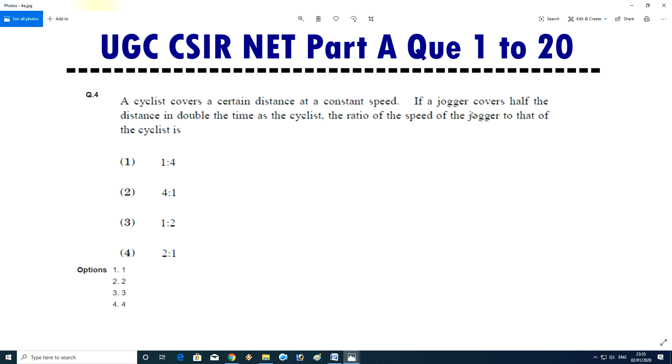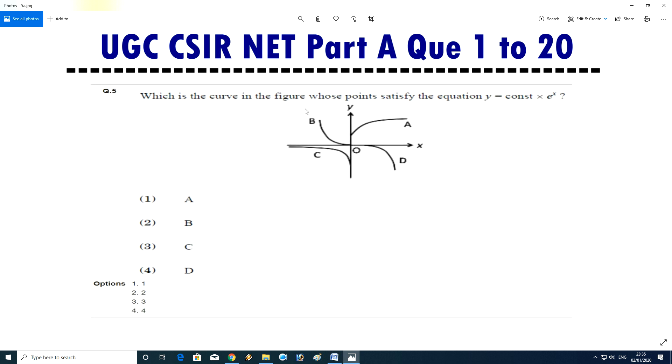Question number four: a cyclist covers a certain distance at a constant speed. If a jogger covers half the distance in double the time as the cyclist, the ratio of the speed of the jogger to that of the cyclist is, answer is A, one is to four. Question number five: which is the curve in the figure whose points satisfy equation y equals constant times x square? C will be the correct answer, means third option.